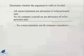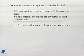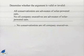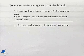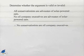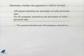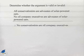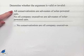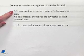Here's another argument we want to consider. Determine whether the argument is valid or invalid. All conservationists are advocates of solar-powered cars. No oil company executives are advocates of solar-powered cars. Therefore, no conservationists are oil company executives. Let's take each premise and draw a diagram that indicates its truth.